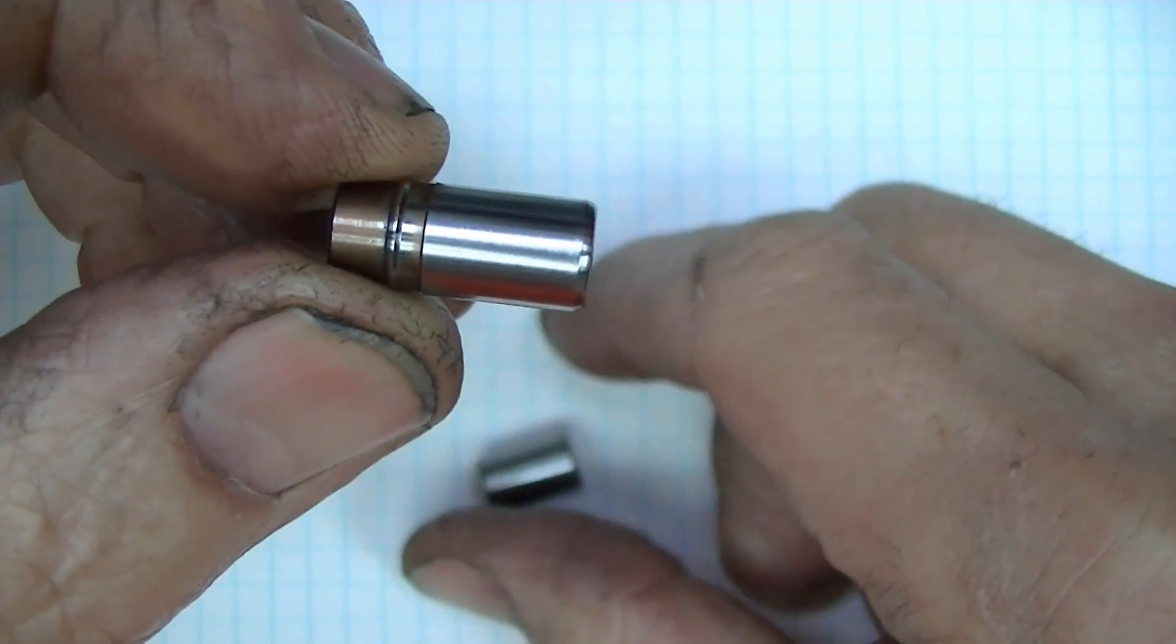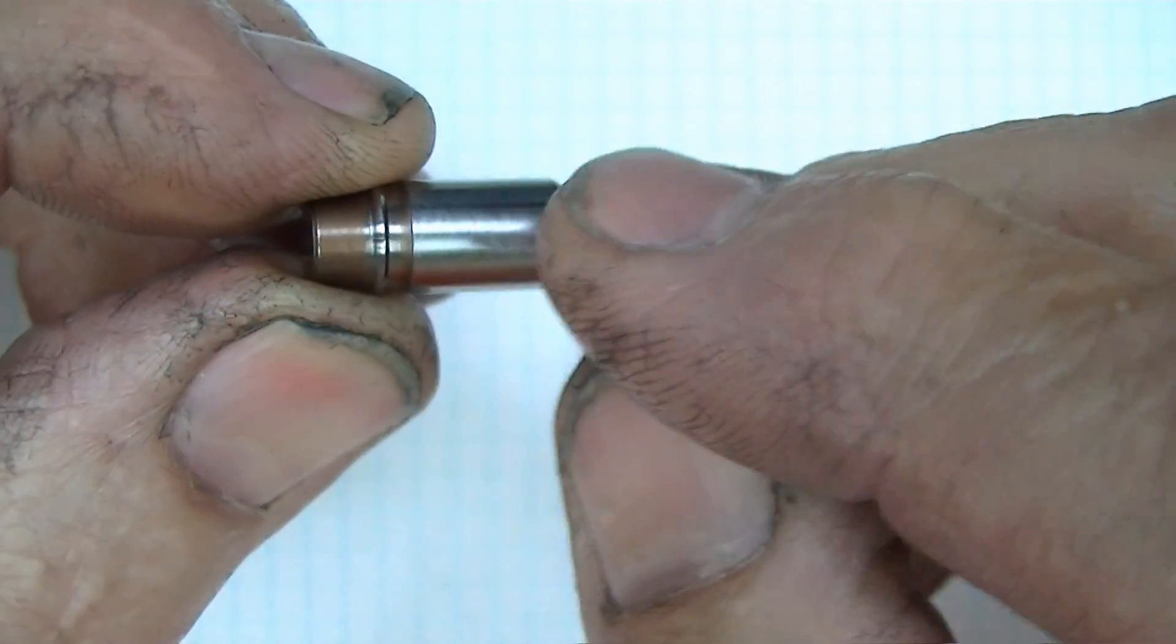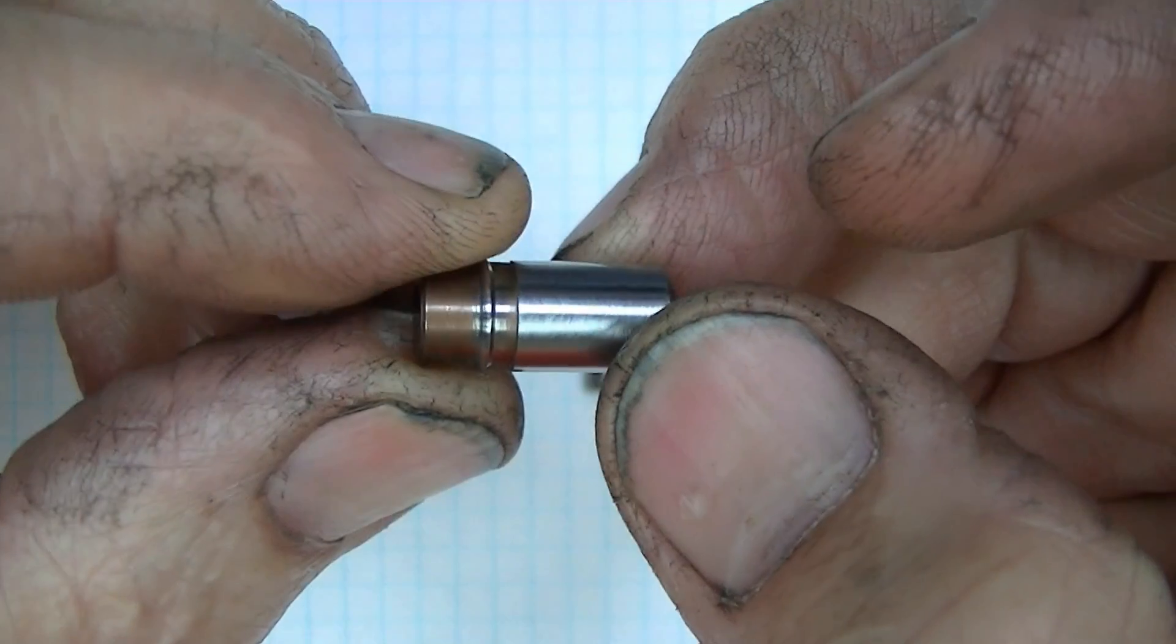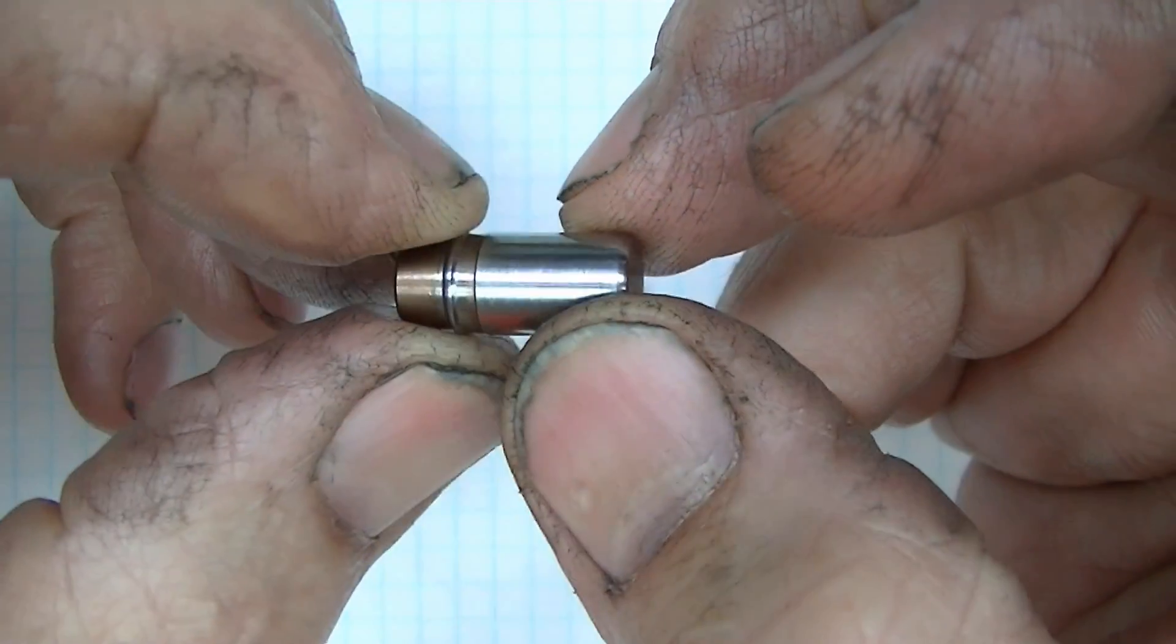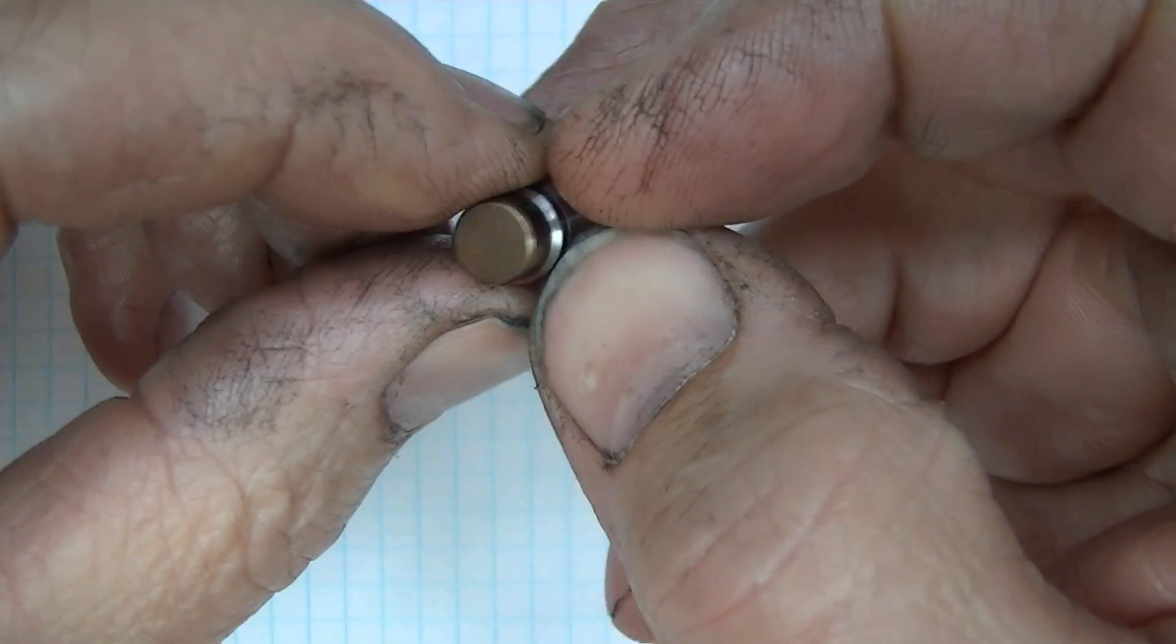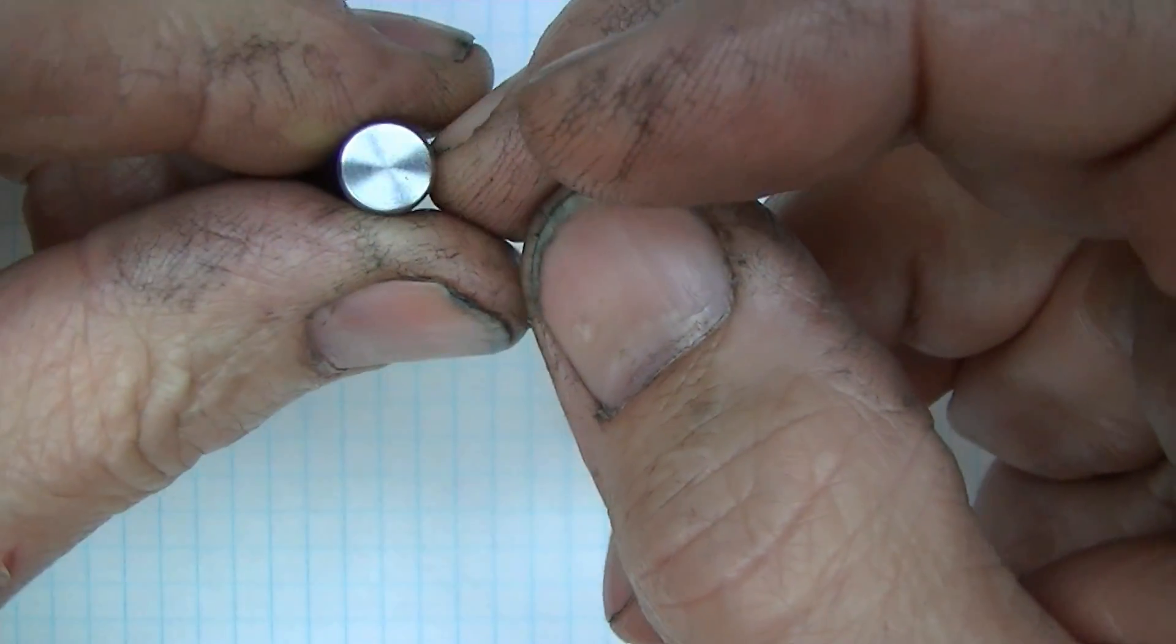This is the other part, 0.3125 diameter. This was turned leaving five tenths on here for lapping after heat treat. But I wasn't really considering this part at first because I didn't think I could do what I'm going to describe here.